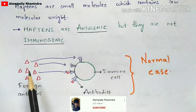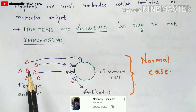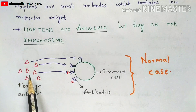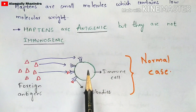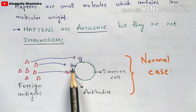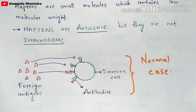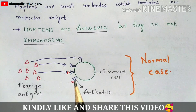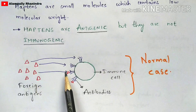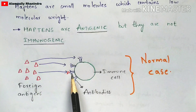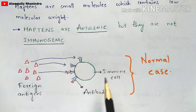In the normal case, foreign antigens present in the external environment enter your body. Immediately, antibodies are produced against those antigens. The foreign antigens move toward the immune cells, which recognize them and produce antibodies on their surface. The foreign antigens then bind to those antibodies and the defense mechanism is triggered.